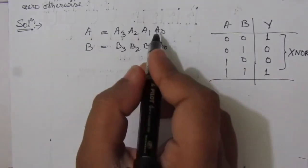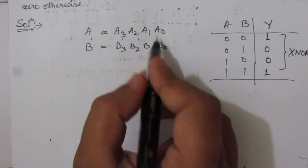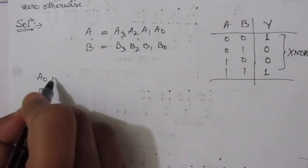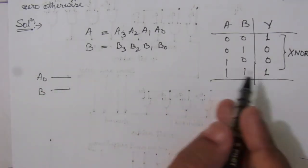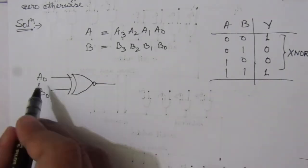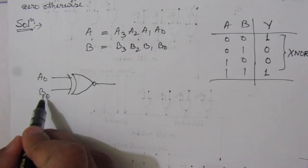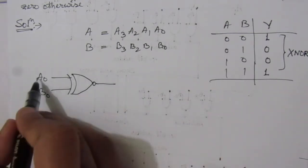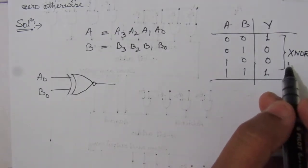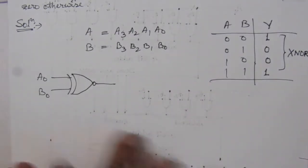Now let us find out the comparison between A0 and B0. What we have to do is apply these two inputs to an XNOR gate. Whenever A0 and B0 both are equal, we will have 1 here. Whenever these two are not equal, we will have 0 here, because this is the truth table of XNOR gate.